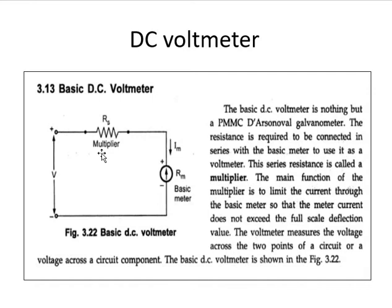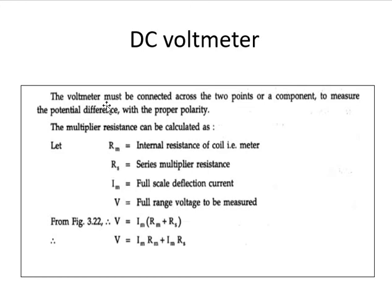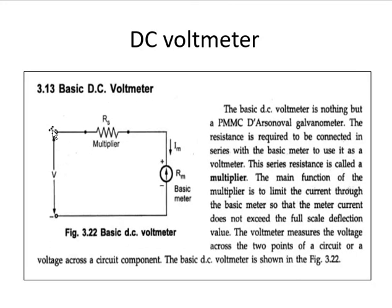In the basic DC voltmeter, instead of a shunt resistance we deal with a series resistance denoted by R_S. R_S is implemented in series with R_M. The series resistance is called a multiplier. The main function of the multiplier is to limit the current flowing through the meter so it does not exceed the full scale deflection value. The voltmeter must be connected across the two points or a component, with the proper polarity, to measure the potential difference.